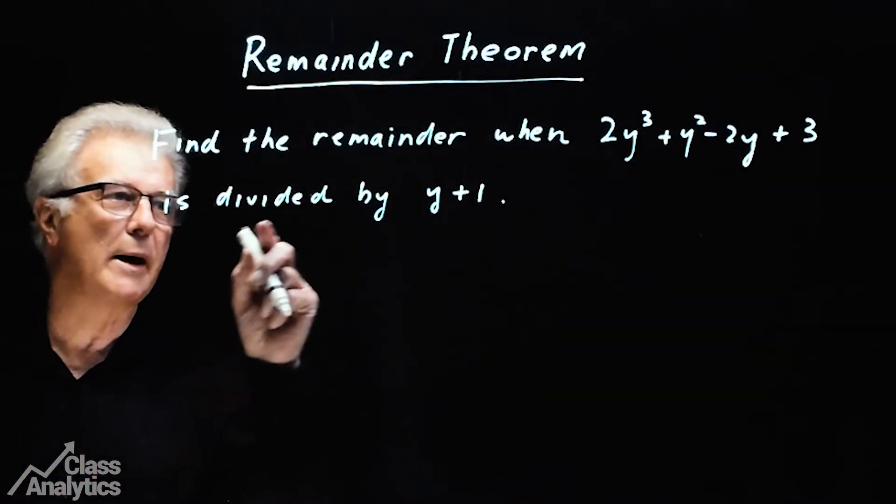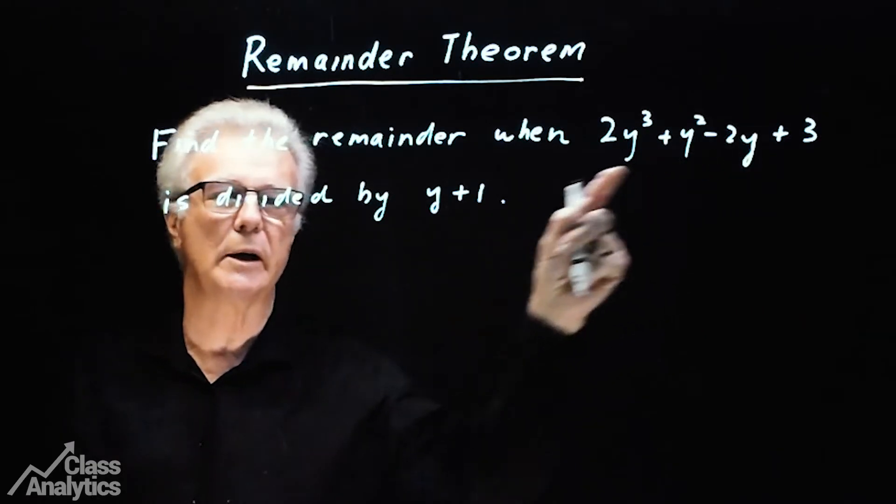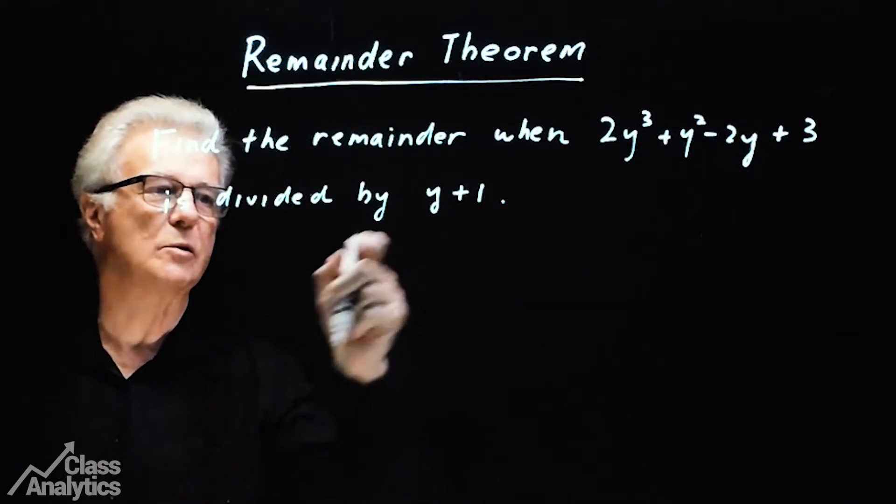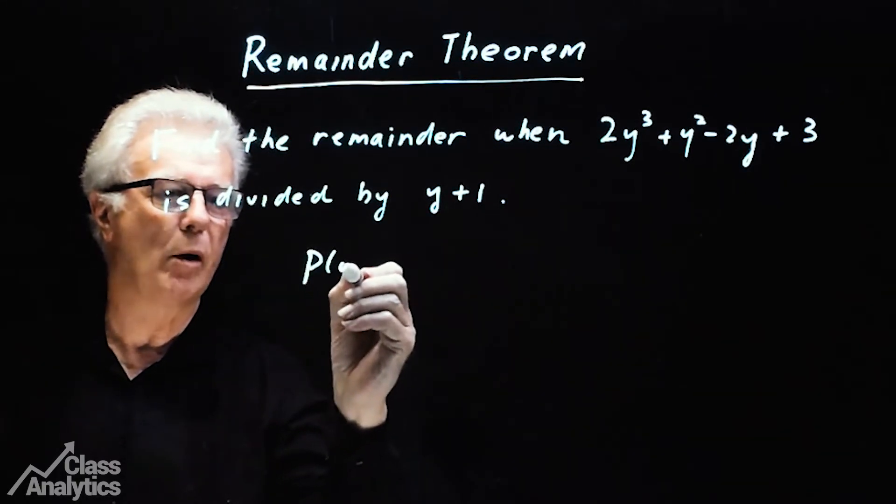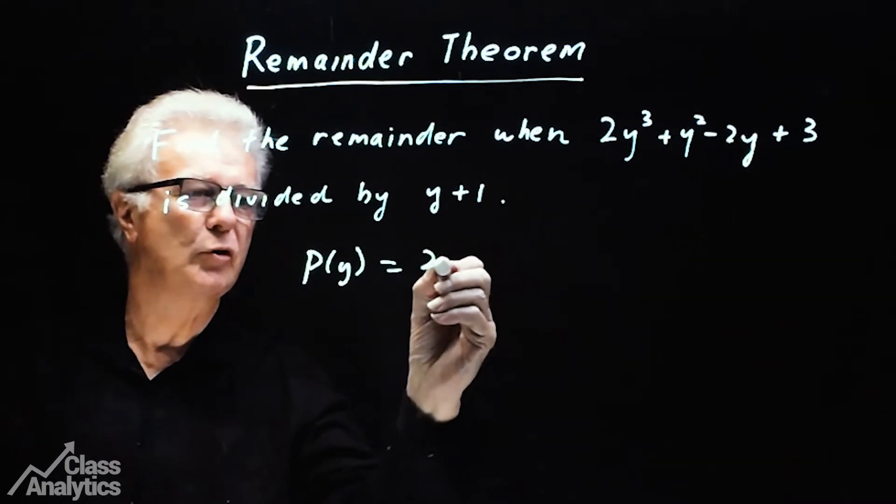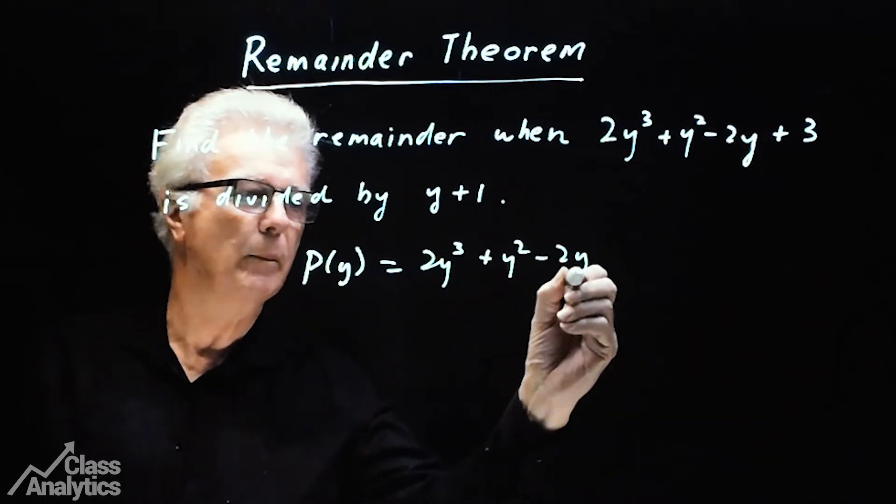In this one, we have to find the remainder when 2y cubed plus y squared minus 2y plus 3 is divided by y plus 1. So we'll set up the polynomial as this. So p(y) equals 2y cubed plus y squared minus 2y plus 3.